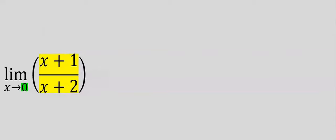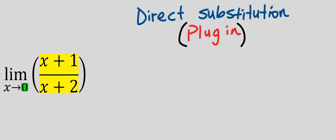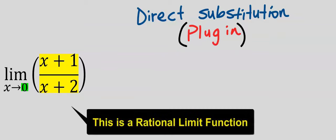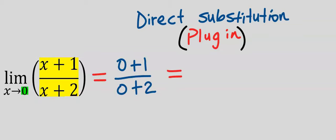Next, consider this question. Always remember that the first step is direct substitution, which is plug-in. I will plug in 0 for x, and you can see the answer is 1 over 2. Since we got a real number, we do not need L'Hôpital's rule.